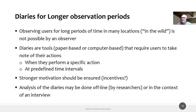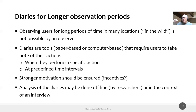Diaries are especially useful when we want to observe people over longer periods of time, maybe weeks. We can't have an observer living with a person for several weeks. So if we want to observe users over a long period during their normal life or work, the users themselves should be able to check and take note of their activities. These diaries can be paper-based or app-based, where users record relevant activities with time stamps.